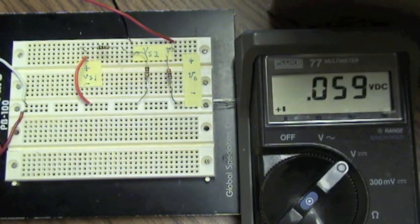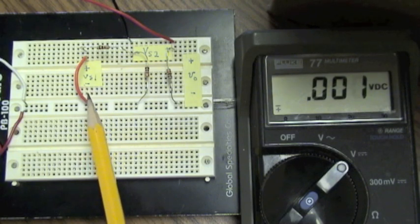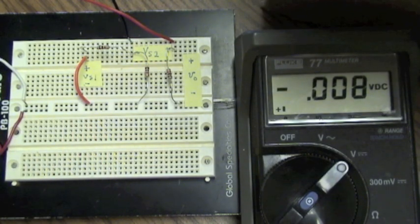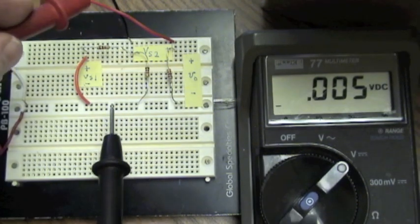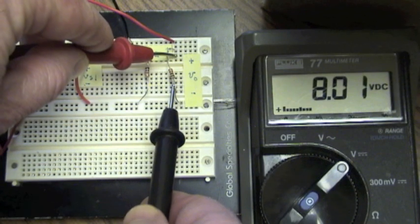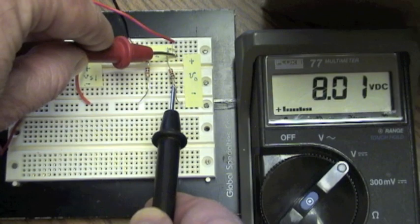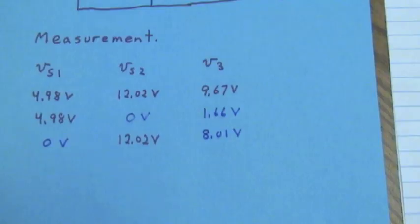Now we've reinstated power supply Vs2, but we've replaced Vs1 by a short circuit. Set that equal to zero. We shall measure the voltage across R3, the output voltage, and it's 8.01 volts, or essentially two-thirds of Vs2, two-thirds of 12 volts. So now we can add to our measurement record what we measured with only Vs1 was 1.66 volts. What we measured with only Vs2 was 8.01 volts.